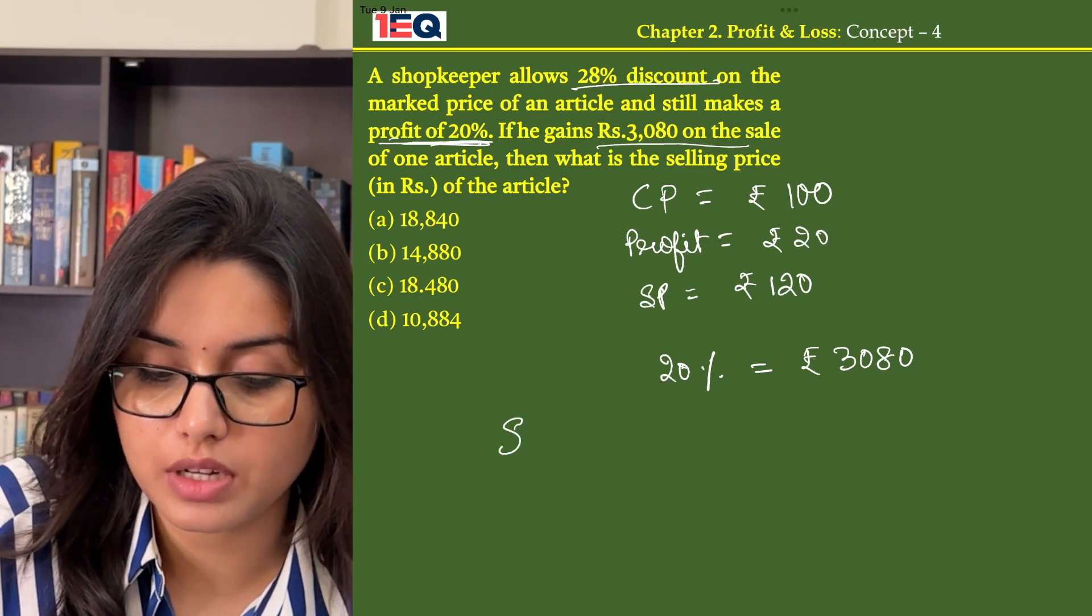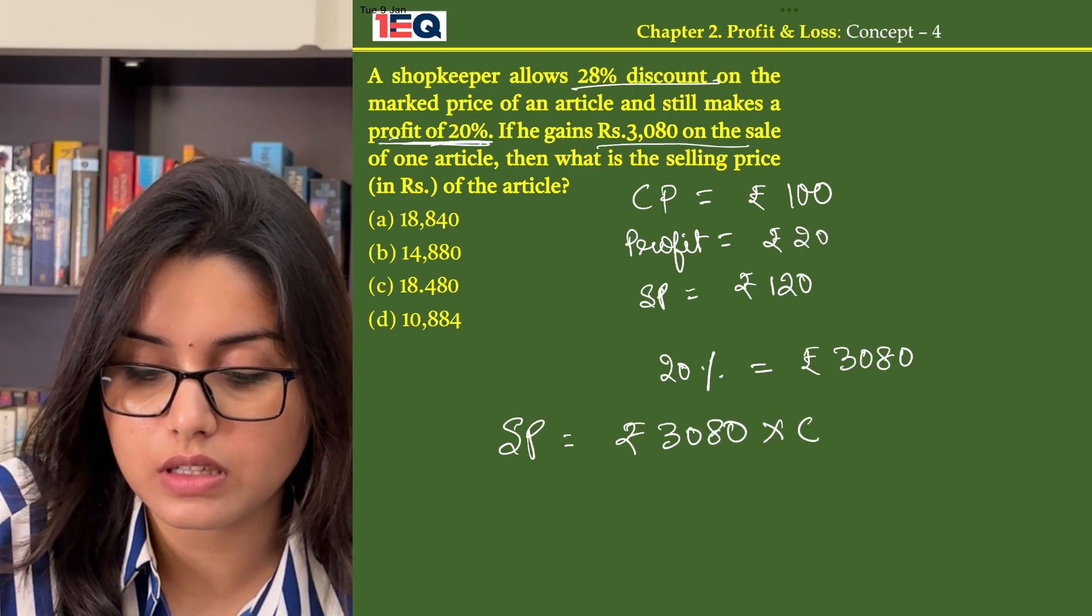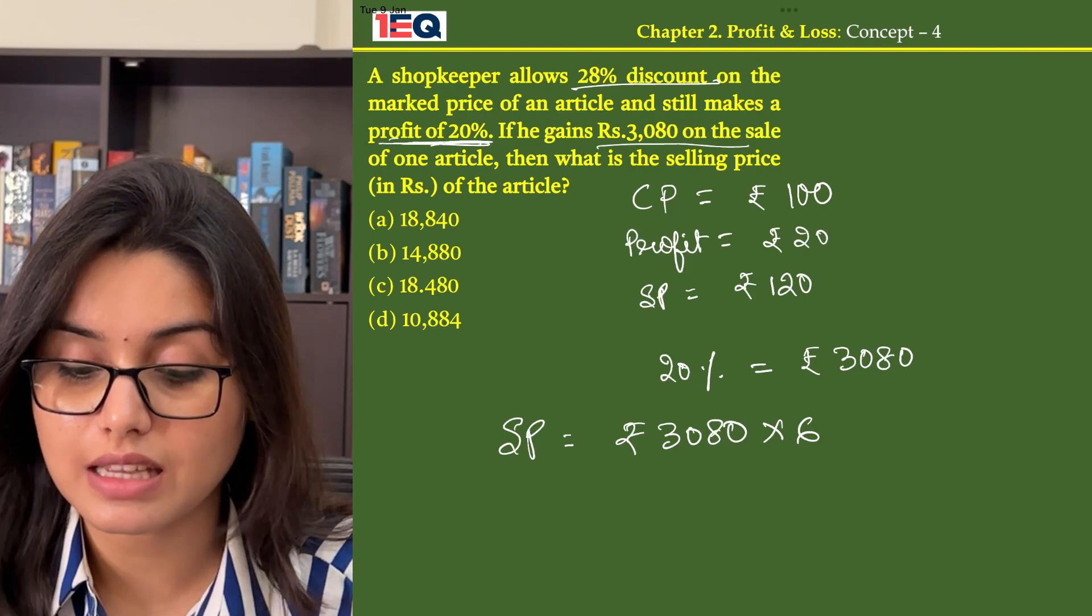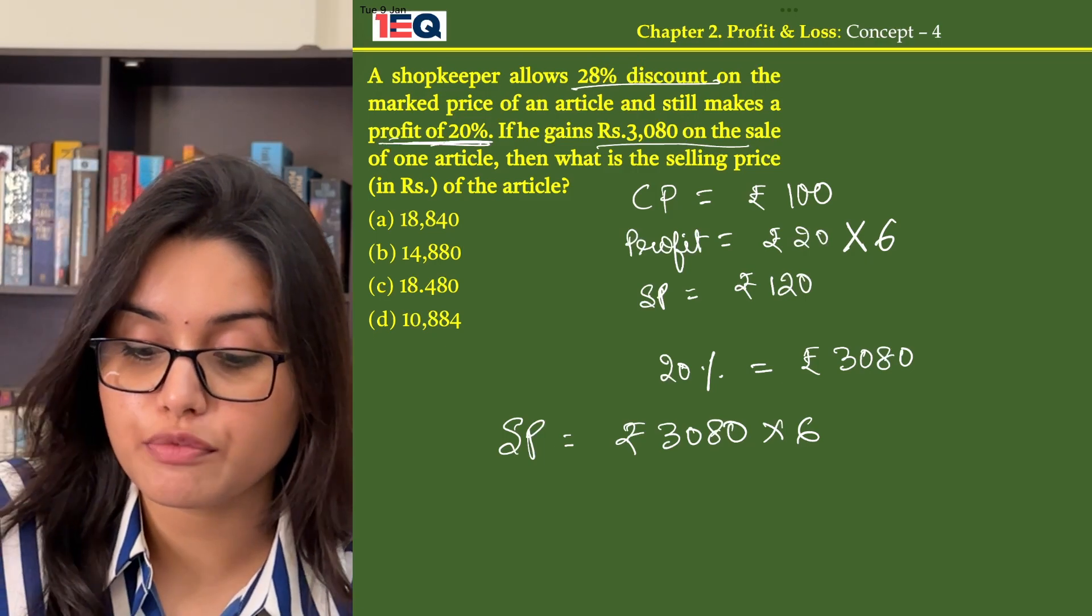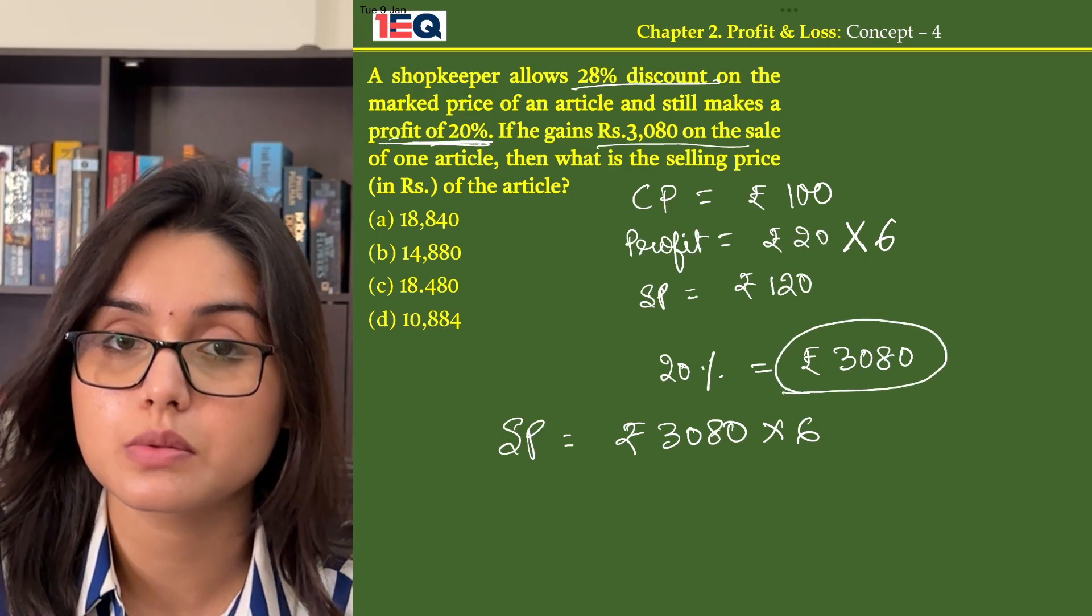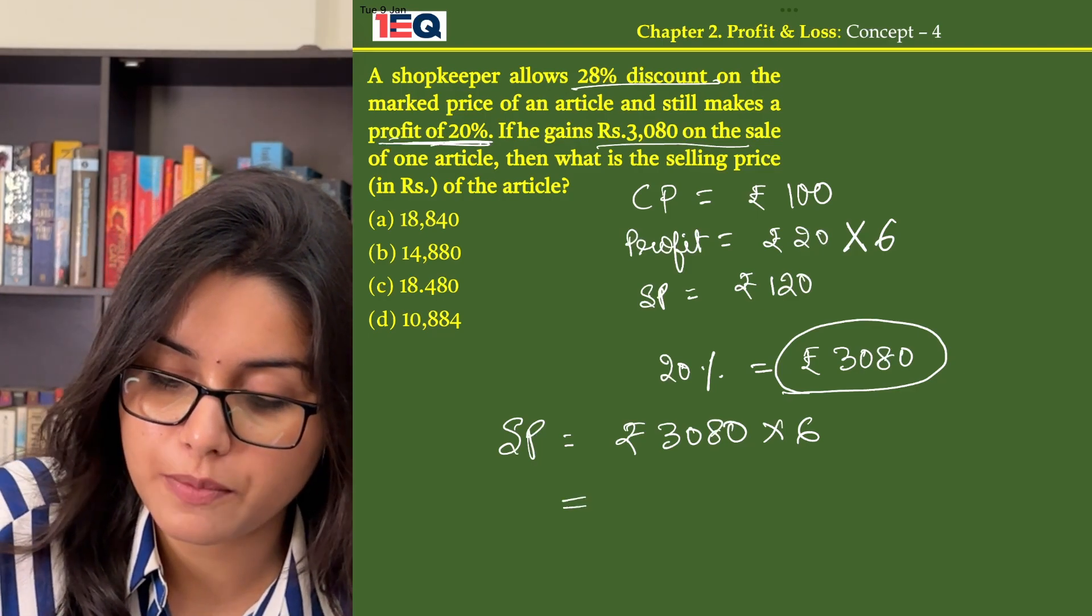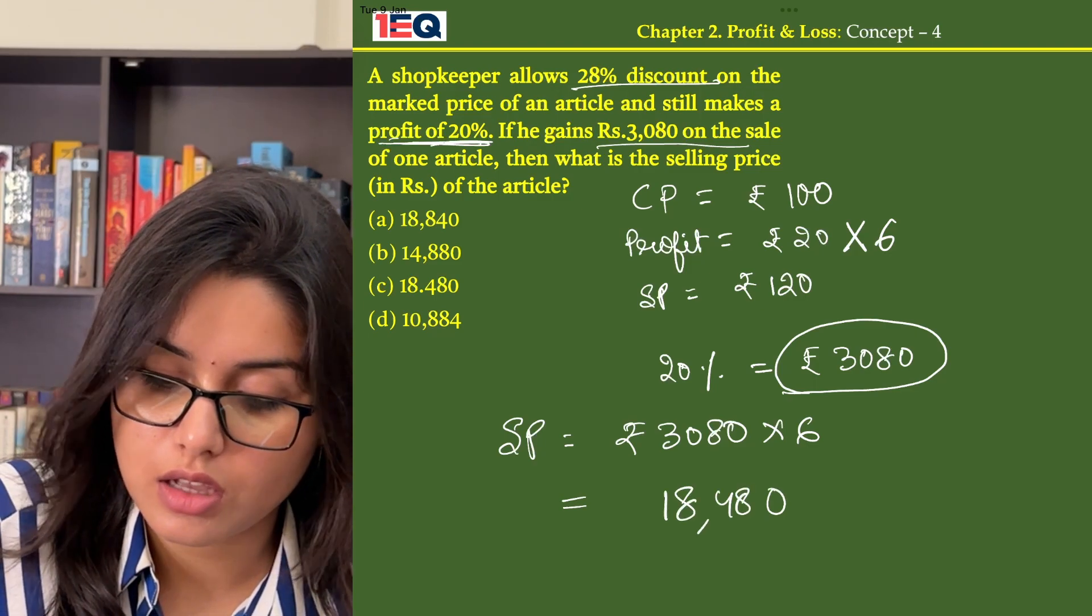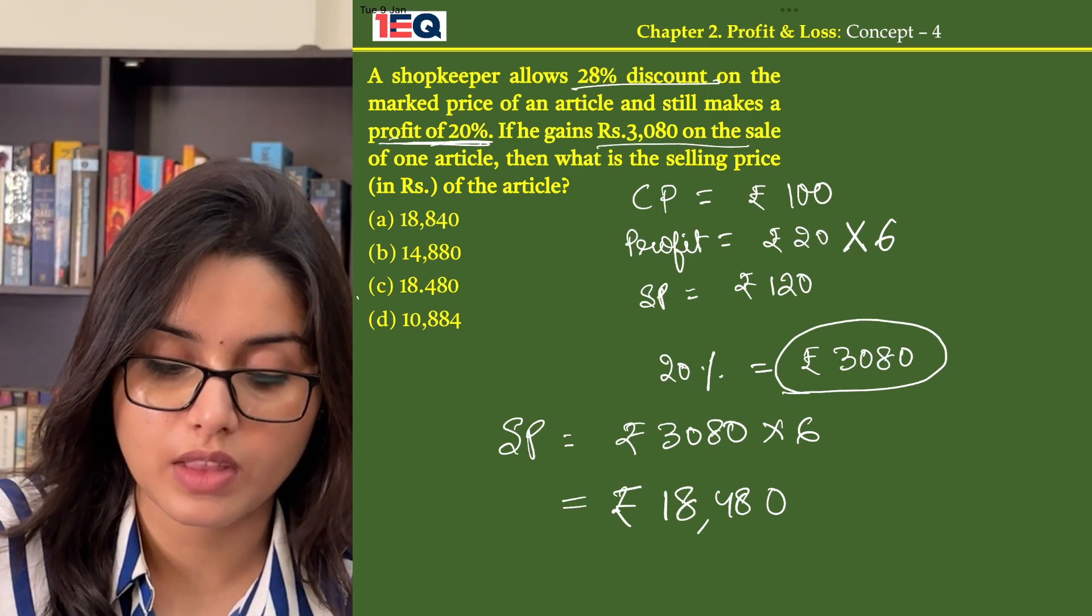Then my selling price will be rupees 3,080 into 6. Why multiply by 6? Now if you see, my selling price is 6 times my profit. So if my gain amount is 3,080, my selling price will be 6 times that amount. So 3,080 into 6 gives me 18,480. So my answer is 18,480, which is option C.